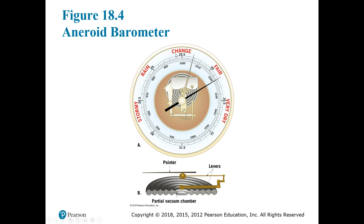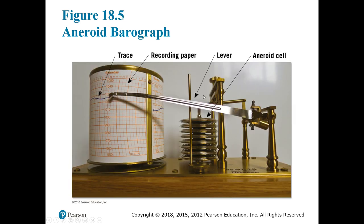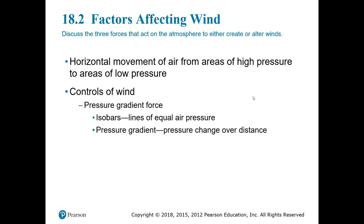In the middle of the dial is some indication of change. If the barometer is rising, we say it's clearing up. If the barometer is falling, a storm is approaching. This image from your book shows how that data is actually recorded.